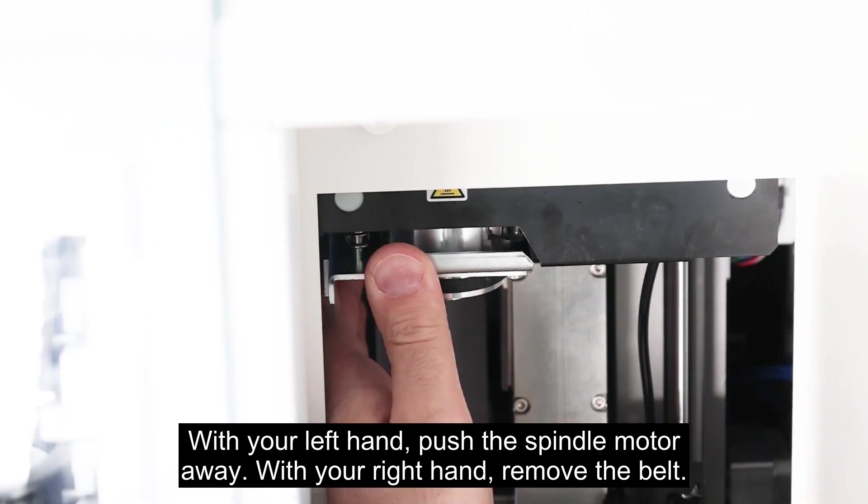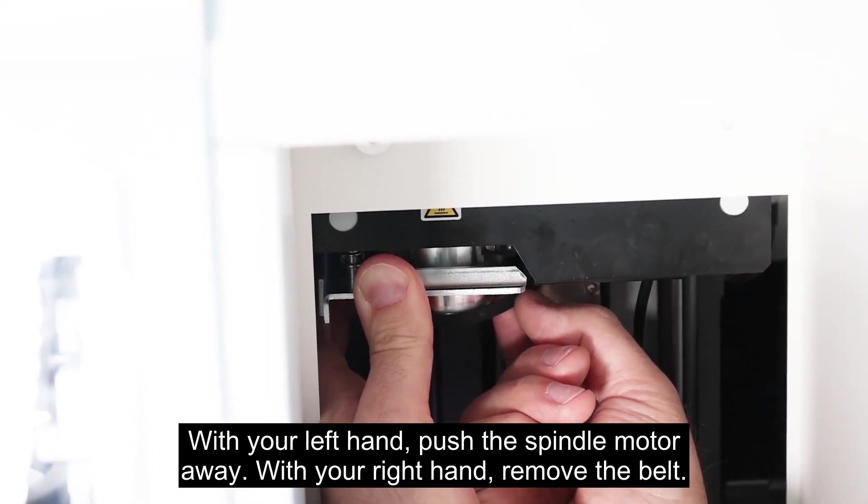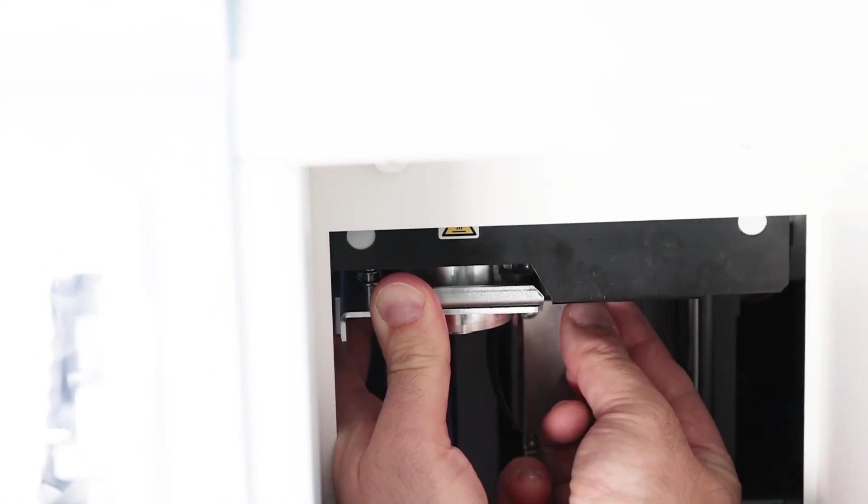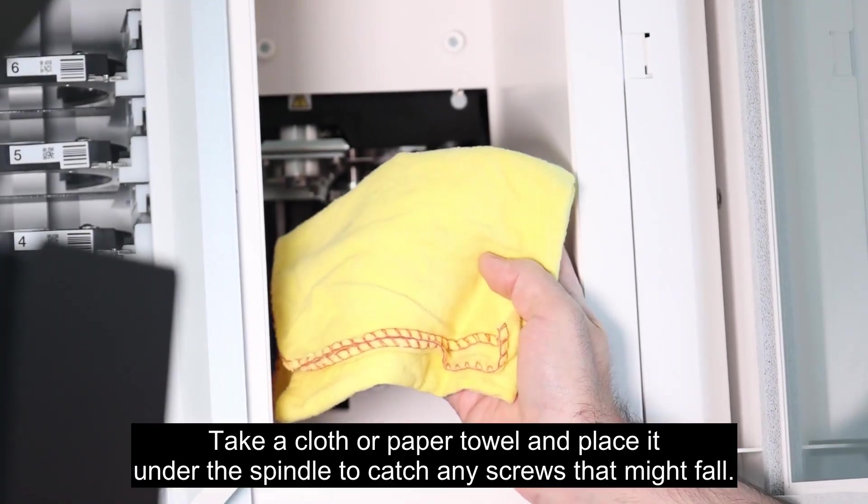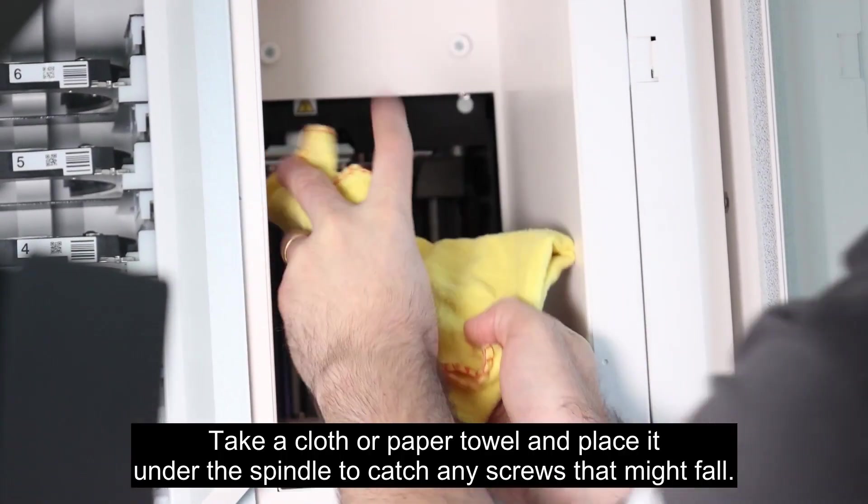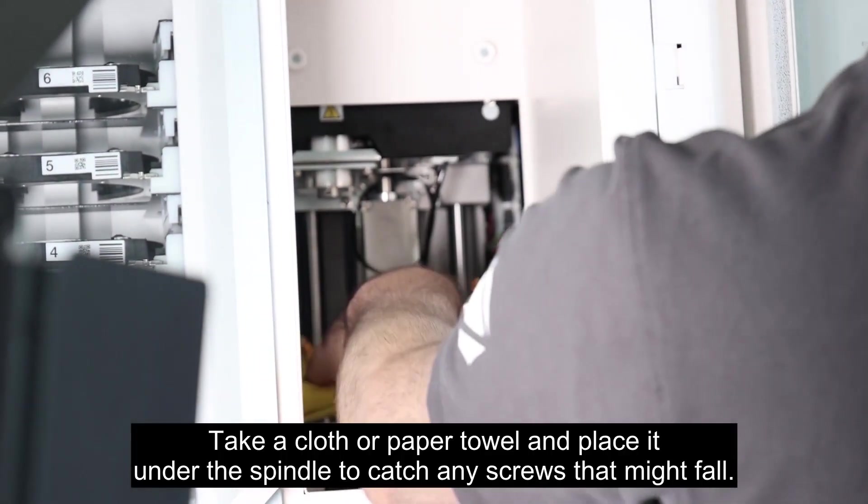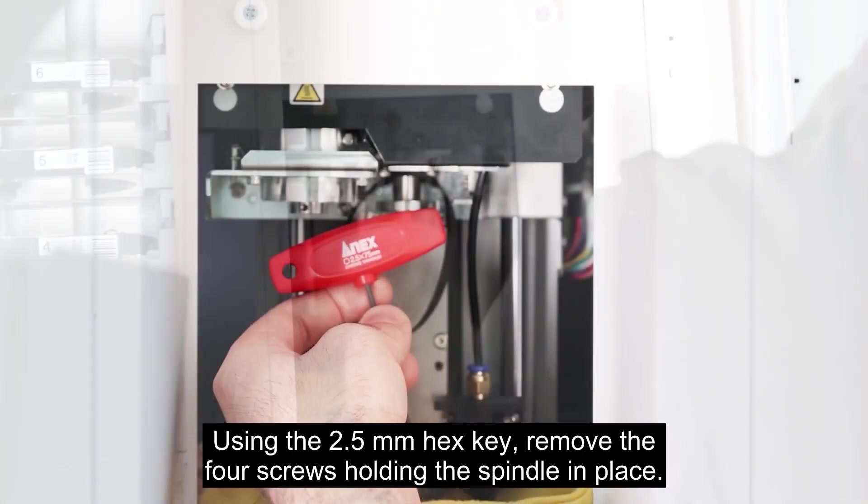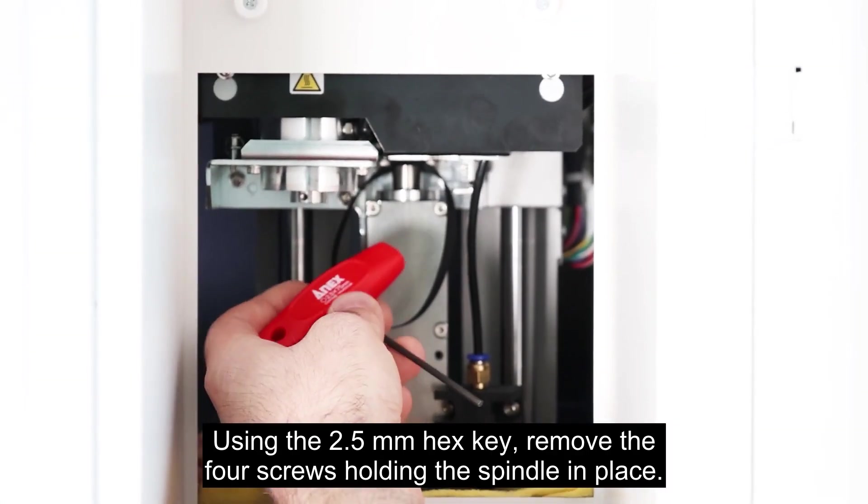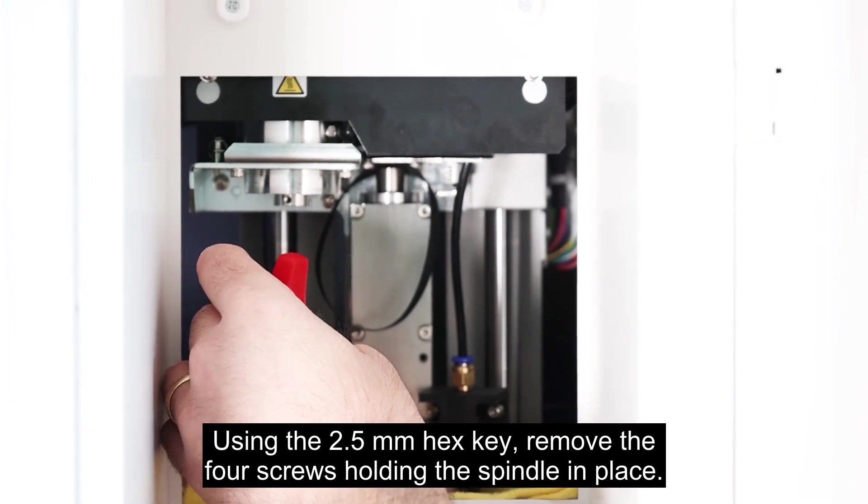With your left hand, push the spindle motor away. With your right hand, remove the belt. Take a cloth or paper towel and place it under the spindle to catch any screws that might fall. Using the 2.5 millimeter hex key, remove the four screws holding the spindle in place.